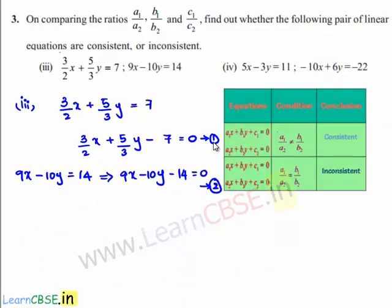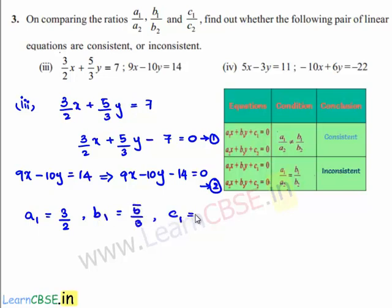Comparing the first and second equations with the standard equations a1x plus b1y plus c1 is equal to 0 and a2x plus b2y plus c2 is equal to 0, we get a1 is equal to 3 by 2, b1 is equal to 5 by 3, c1 is equal to minus 7, and a2 is equal to 9, b2 is equal to minus 10, and c2 is equal to minus 14.